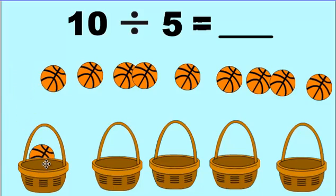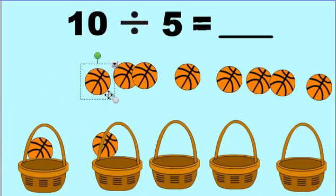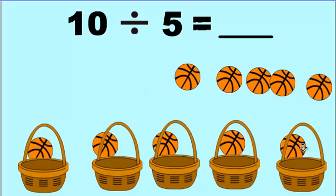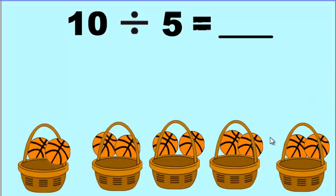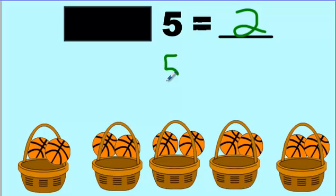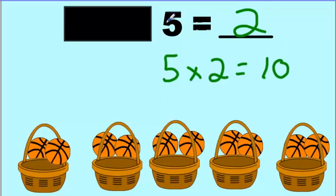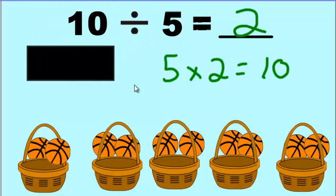We put one ball in each basket, going around until we run out. They all get two. So we write two in each one. To check: cover the first part, look at the last two numbers — five times two. Five groups of two makes ten, and when I uncover the first number I see ten. Ten and ten match, so we did it properly.